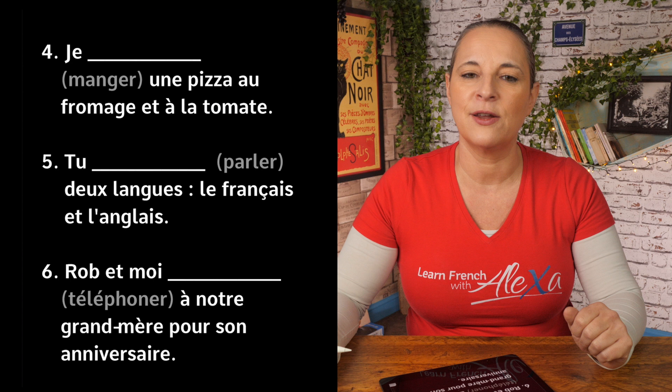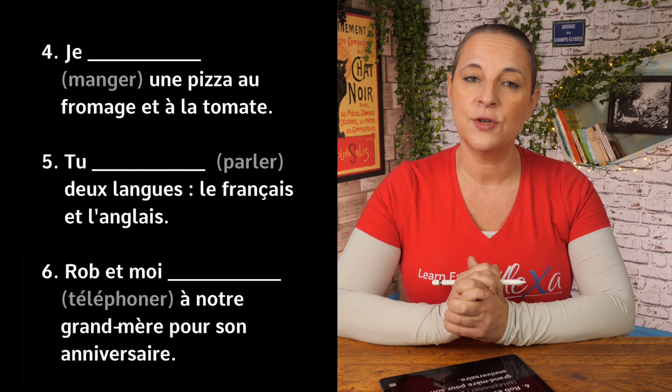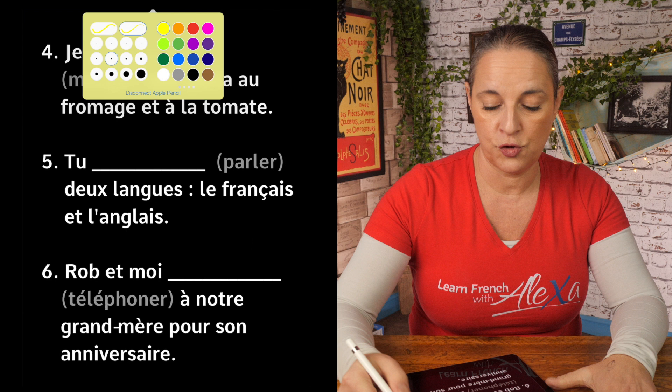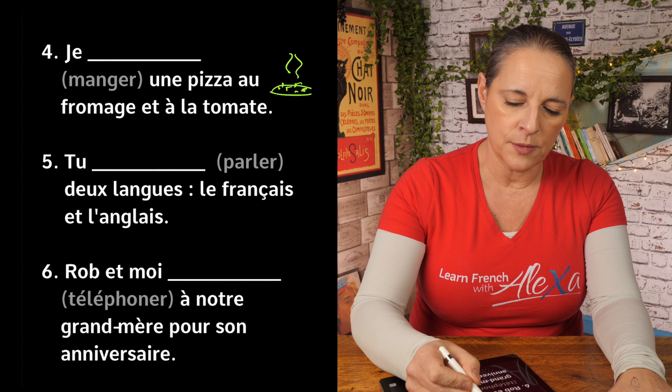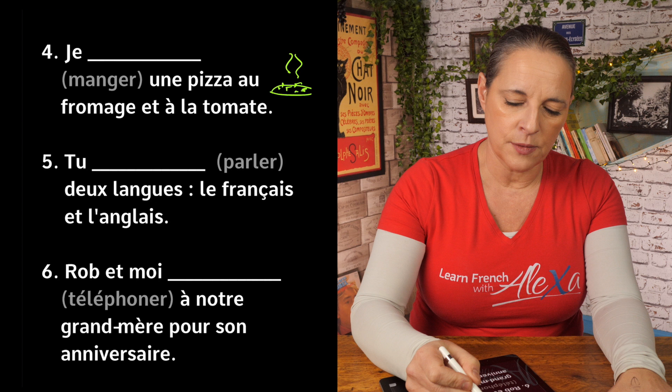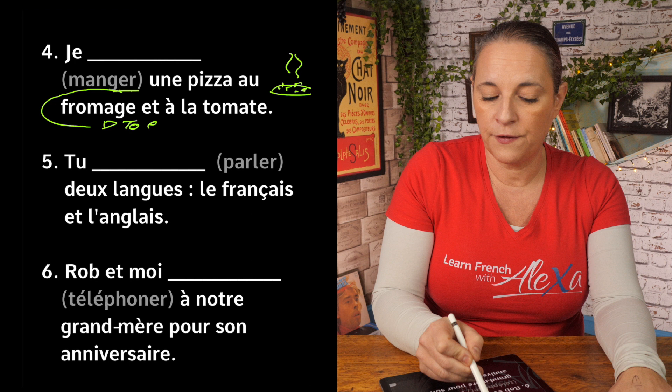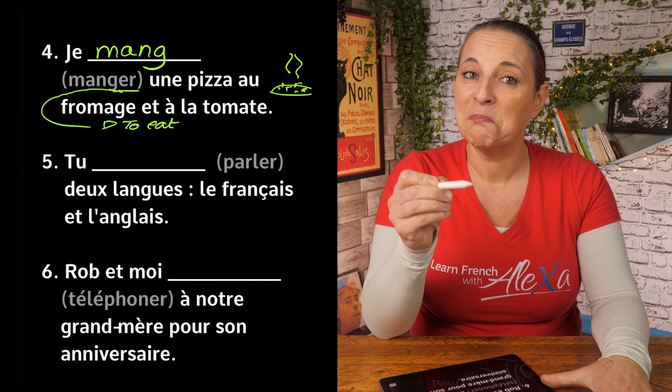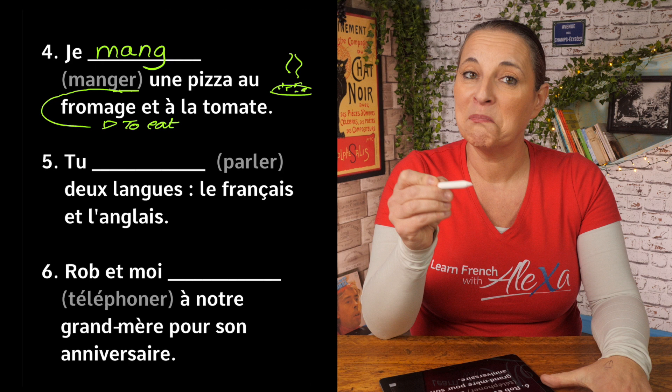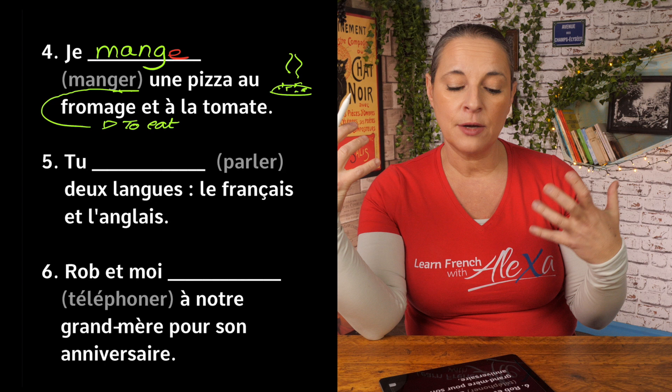Number four: je, with the verb manger — a first-group verb meaning to eat. Knowing it's a first-group verb makes it easy to conjugate. For je, the ending is E: je mange. Je mange une pizza au fromage et à la tomate — I'm eating a cheese and tomato pizza.